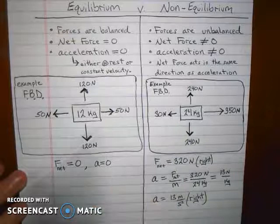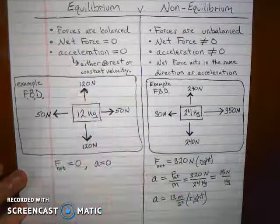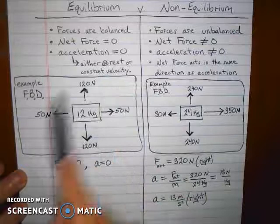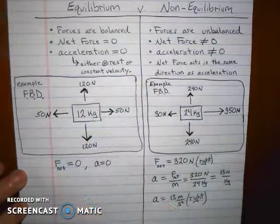So anytime you're in equilibrium, all the forces acting on any object are balanced. The net force, which is the sum of all forces, is zero. Therefore, the net acceleration is zero, which means the object's either at rest or it's moving at the same speed in the same direction with a constant velocity.